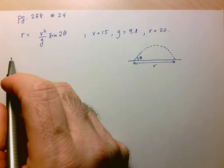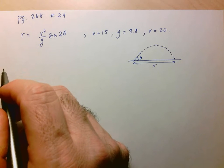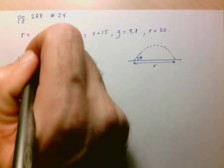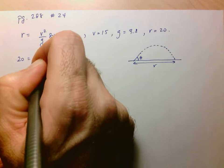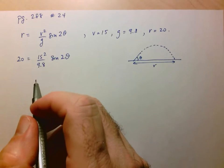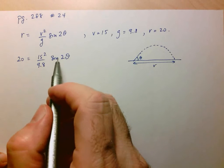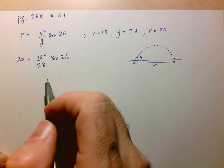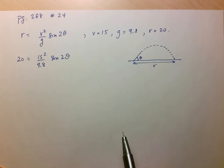Let's put everything in and we'll see that we have a fairly simple equation to solve. R equals 20, V is 15 squared over 9.8 sine of 2 theta. We have a fairly easy trigonometric equation with theta being our only remaining variable.